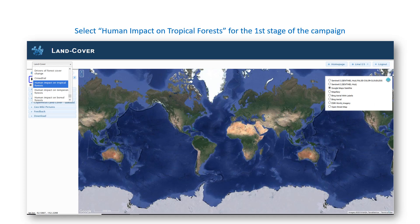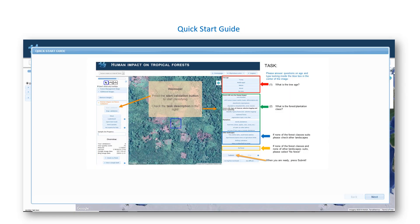On the top left of the GeoWiki screen, select Human Impact on Tropical Forests for the first stage, or Human Impact on Temperate Forests or Human Impact on Boreal Forests for the next stages of the campaign. GeoWiki will remember your settings and will take you directly there next time. The first time you enter the Human Impact on Tropical Forests application, you will be taken through a quick start guide. Pay special attention to how we define different classes of forest management: what is forest with very low human impact, what are plantations, and what do other classes represent.